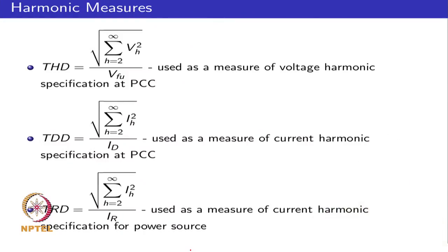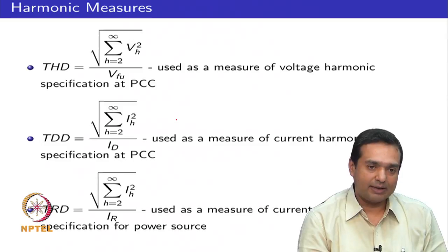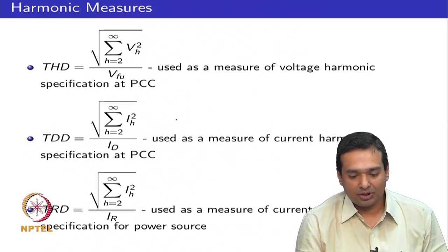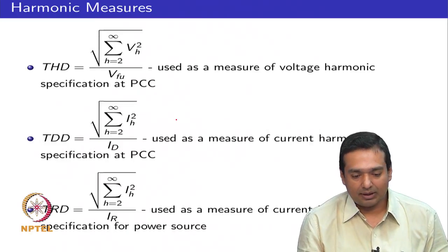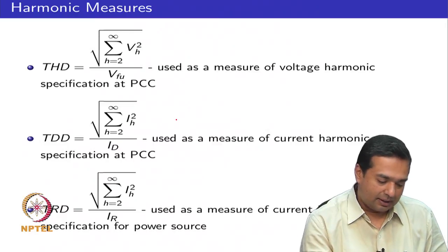Total Harmonic Distortion (THD) is defined as the ratio of the RMS of all harmonic components from the second to the highest considered, divided by the RMS of the fundamental. In the IEEE 519 context, voltage THD (VTHD) is specified at the PCC, and because voltage drops within the facility's conductors are small, the VTHD at the PCC is representative of the VTHD seen by all loads within that facility.